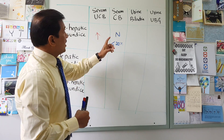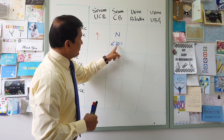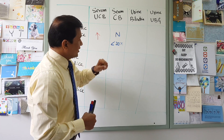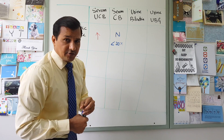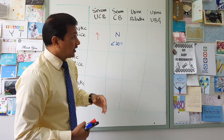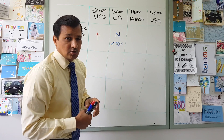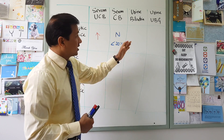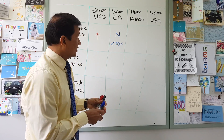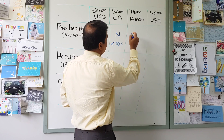Since conjugated bilirubin is less than 20% of normal, it does not exceed the renal threshold, which is why we do not find bilirubin in the urine. So urine bilirubin is absent in pre-hepatic jaundice.